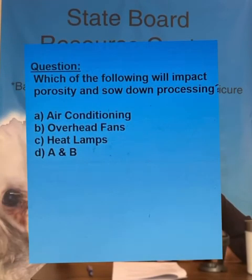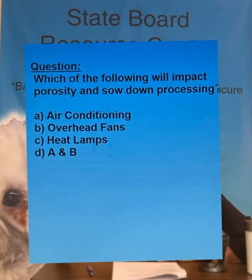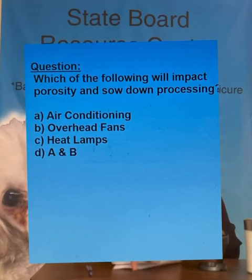Before wrapping up on porosity, we want to keep in mind that temperature has a big impact on porosity. Question number one: Which of the following will affect porosity and slow down the processing of a chemical? A. Air conditioning. B. Overhead fans. C. Heat lamps. Or D. A and B. The answer is D — A and B. Air conditioning and overhead fans will cool the air down and keep the cuticle closed.